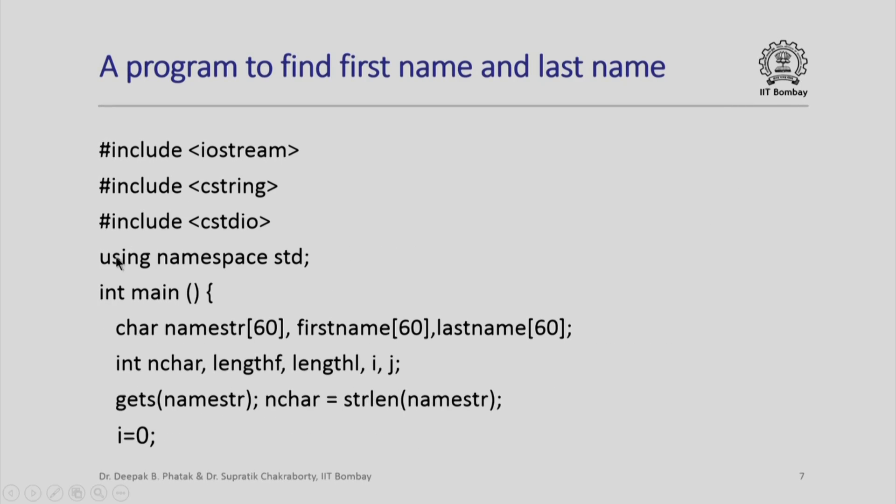Here is a program. Note that here we have included both the library cstring and cstdio, which permits us to use both the functions that we have seen earlier. These are the definitions of the variables and arrays: namestring, firstname, lastname. We have nchar which represents the total number of characters in the array namestring, and we have lengthf and lengthl to represent the length of the first name and length of the last name respectively. i and j are index variables which we will use as stated earlier.